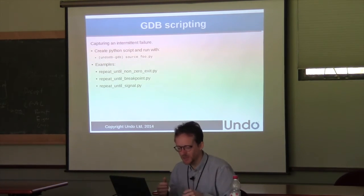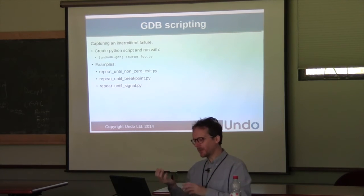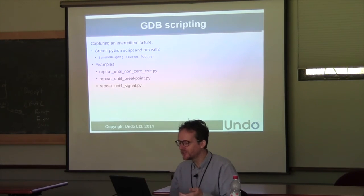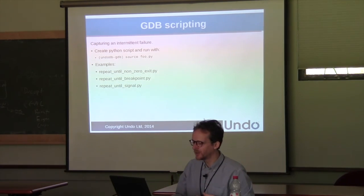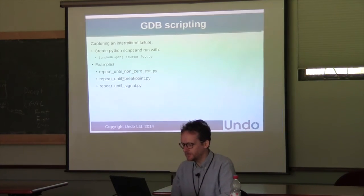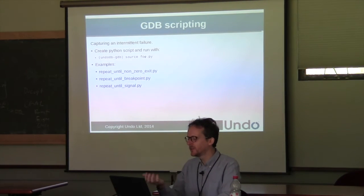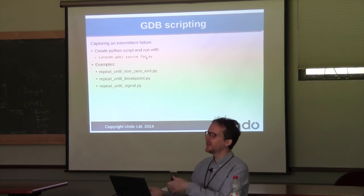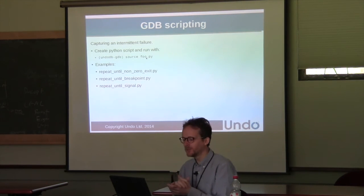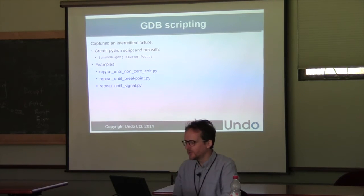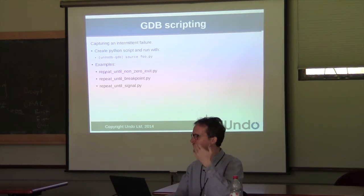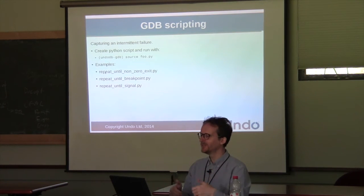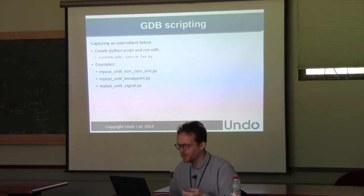Now a little bit of a diversion about GDB Python scripting. The idea is you can create a Python script that imports GDB and runs GDB commands. One example: programs that fail intermittently, only once every thousand times. The last thing you want to do is type 'run' at the GDB prompt and check manually each time. You can script this very easily.